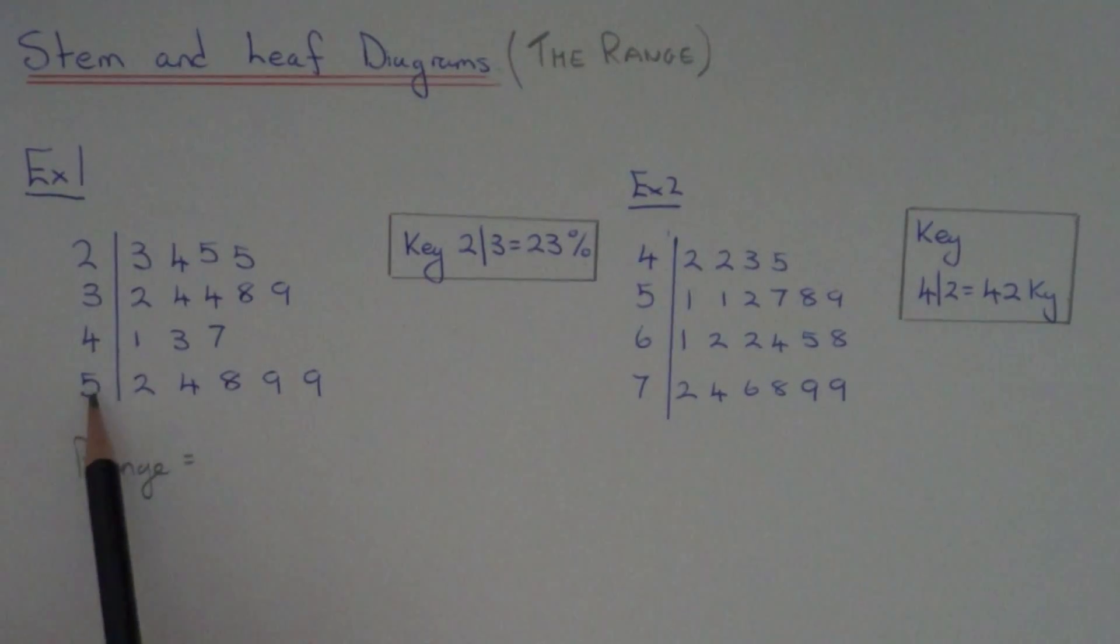So if we look for our biggest, that will be on the bottom row. So we have 59 as our biggest one.